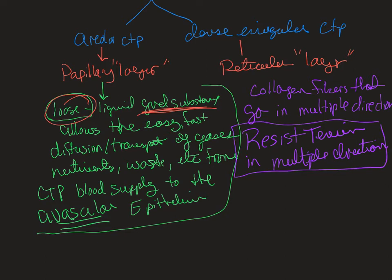Areolar also has multidirectional collagen, but there's not a lot of it — it's mostly ground substance. So it can resist tension in multiple directions, but that's not its major functional feature. If you pull on areolar connective tissue proper, it's going to pull apart super easily.